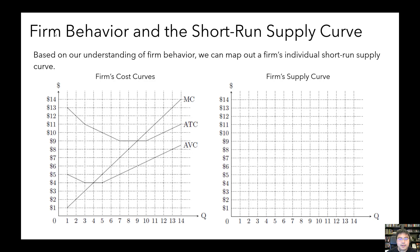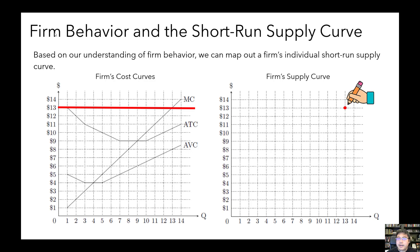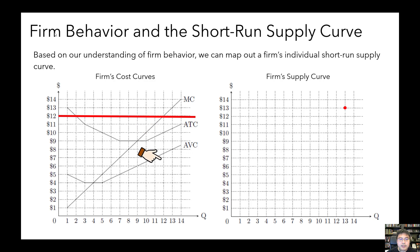Let's start with a price of $13. If the market price is $13, what quantity does this firm choose to produce? That's right, it will choose to produce 13. So we can mark that on the right-hand side graph, and at a price of $13, the firm will choose to produce quantity 13. Now let's go down to the price of $12. What quantity does the firm choose to produce? That's right, 12. So let's mark that point on the firm's supply curve.